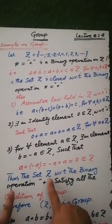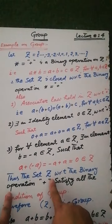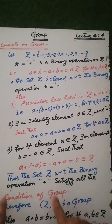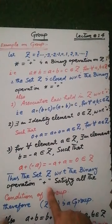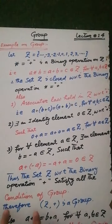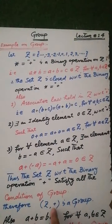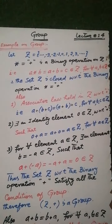Therefore, the set Z of all integers satisfies all the conditions of a group with respect to the binary operation addition. Therefore we can say that the set Z with the binary operation addition is a group.